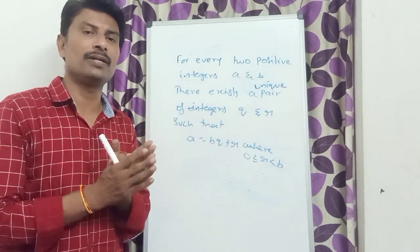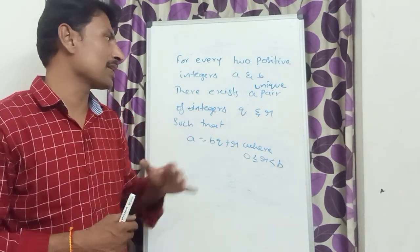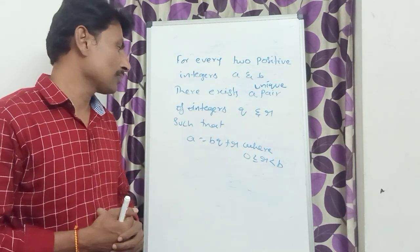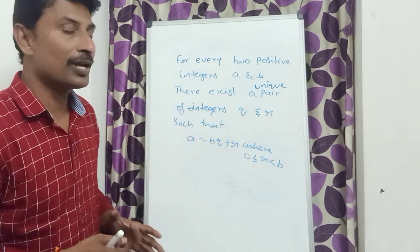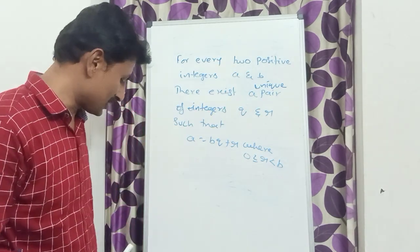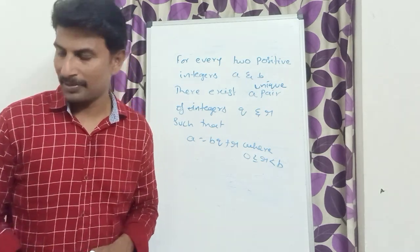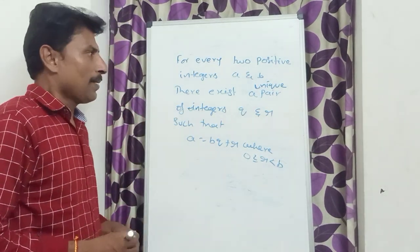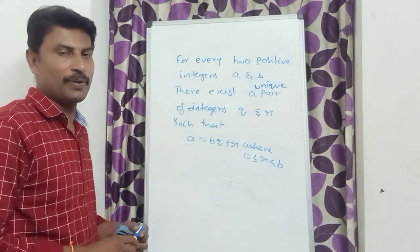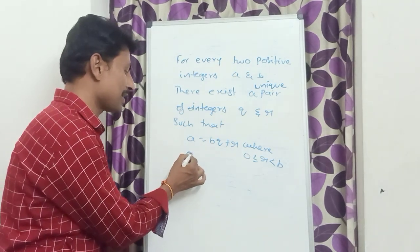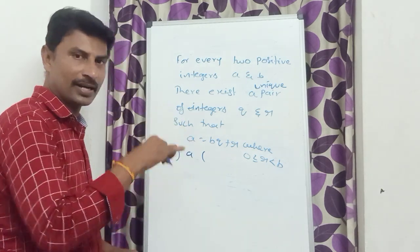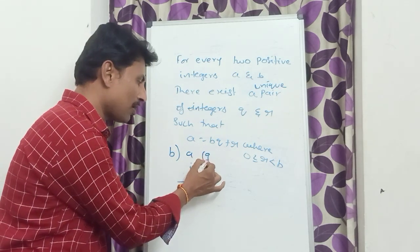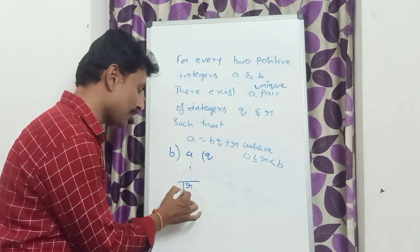It is the statement of Euclid's division lemma. For every two positive integers A and B, there exists a unique pair of integers Q and R, such that A is equal to BQ plus R, where 0 is less than or equal to R, which is less than B. Here Q is in the name of quotient, and R is in the name of remainder.